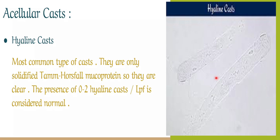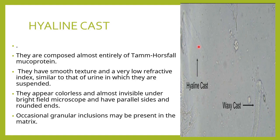Let us begin with the acellular cast — the hyaline cast. Hyaline casts are the most common type of cast seen in urine. They are acellular, containing only Tamm-Horsfall protein. Normally, the presence of around 0 to 2 hyaline casts per low power field is considered normal. They have a very smooth texture and a very low refractive index, so you should keep the condenser of the microscope low, otherwise you might miss this cast.